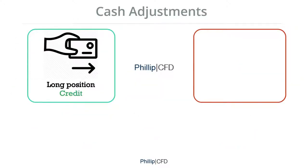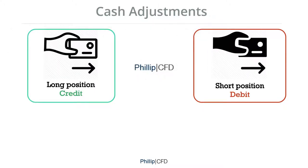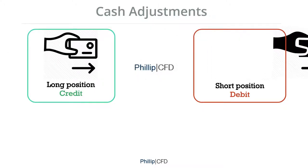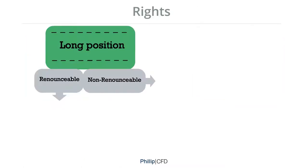Dividend Adjustments will be credited to your account for long positions and debited from your account for short positions. For equities, this process will be done one day before XD. For indices, it will be on XD.